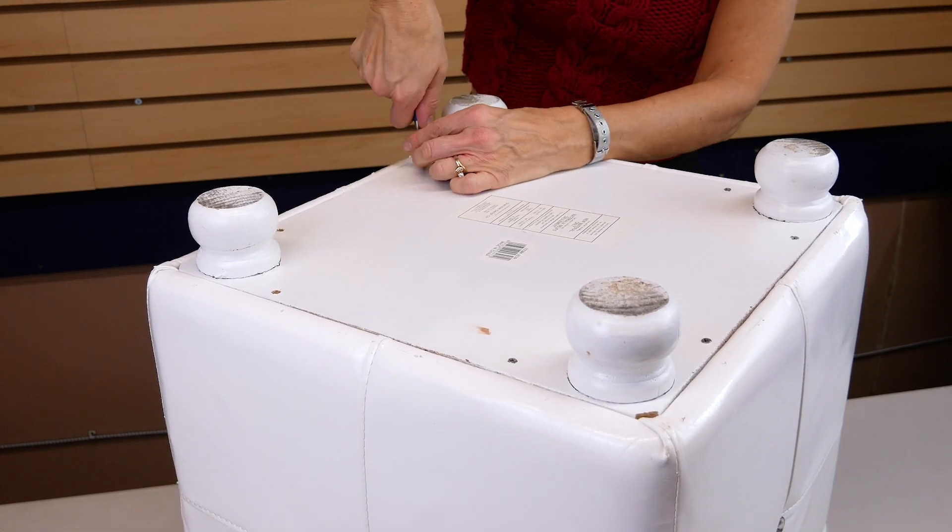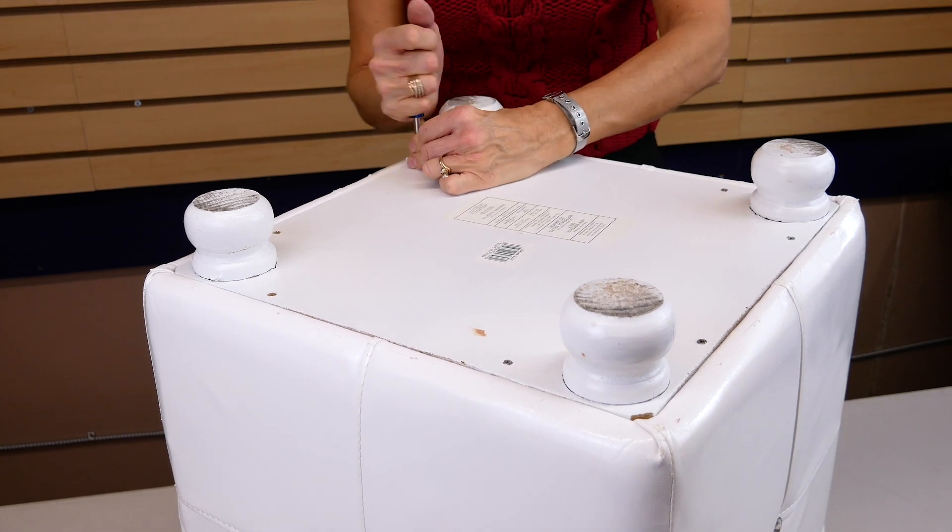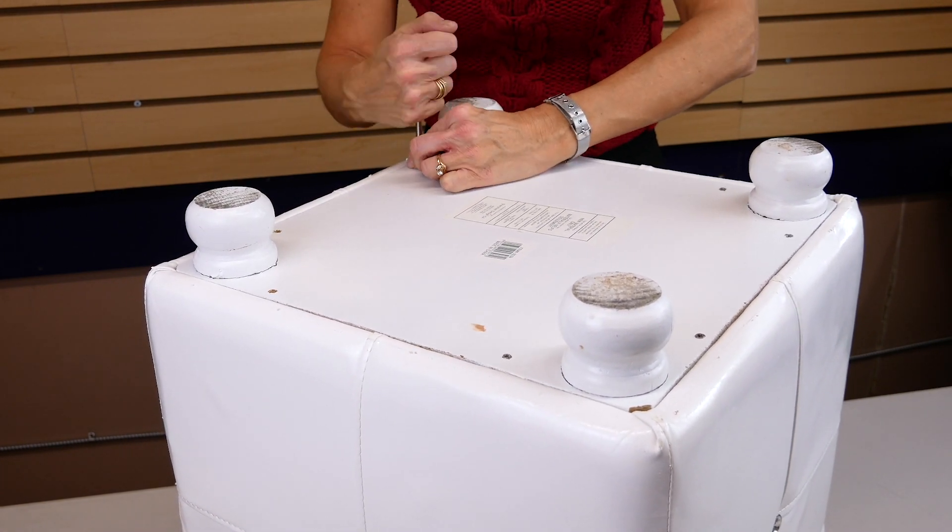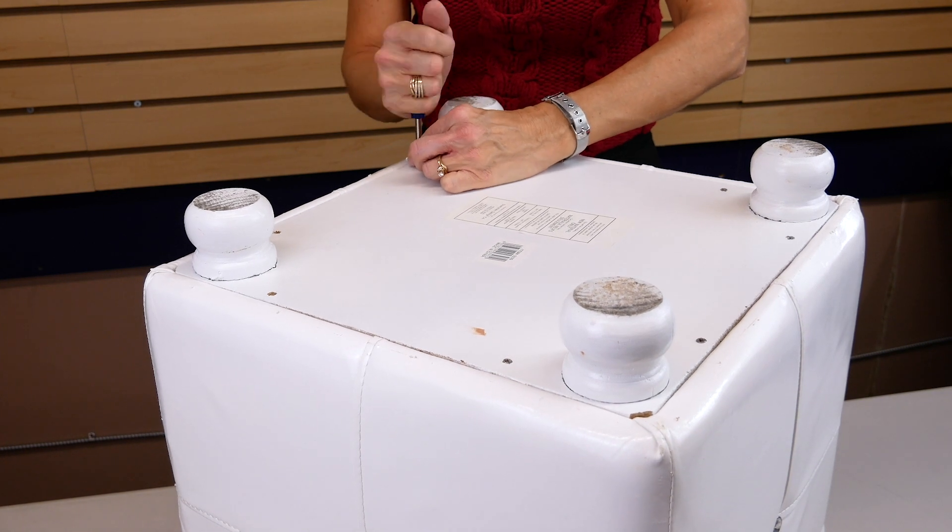First, turn the ottoman upside down to determine how the old cover was attached. You may need to unscrew the legs to remove the cover and pull off the square fabric that finishes the underside.